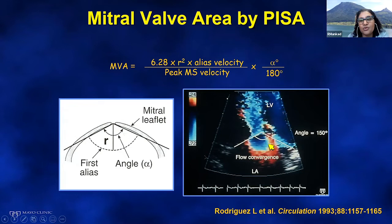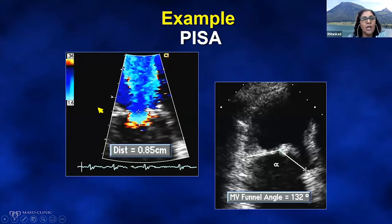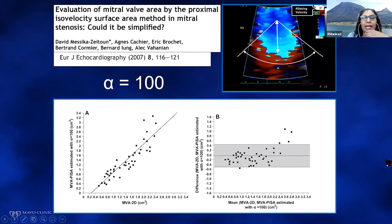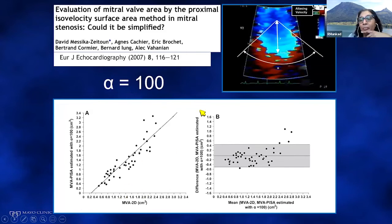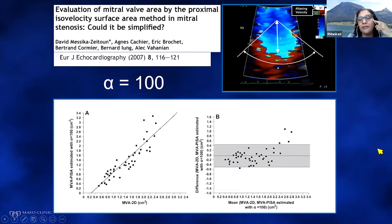You can simplify the PISA method by using 100 degrees as an arbitrary angle — this is not perfect but gives a quick assessment of valve area. However, don't use PISA as the only method, particularly if you have a good pressure half-time in someone in sinus rhythm — that will be your better method.